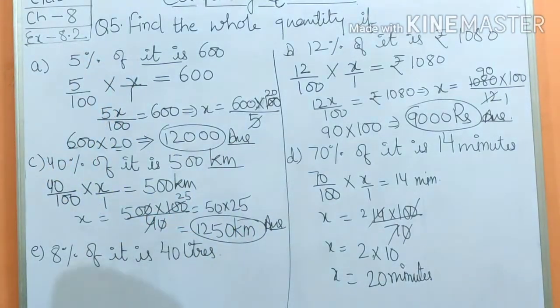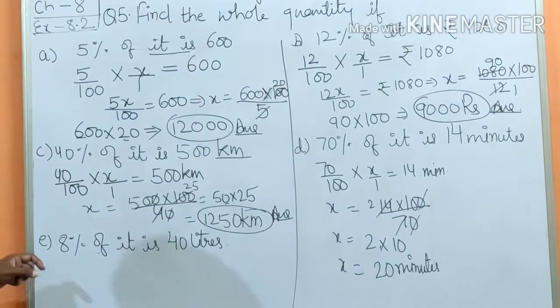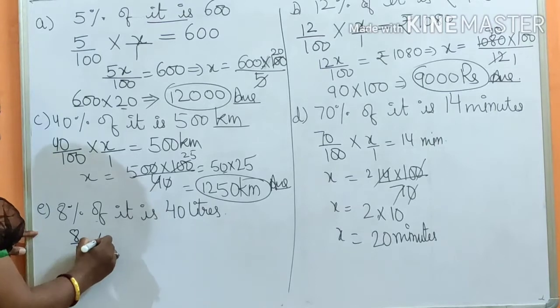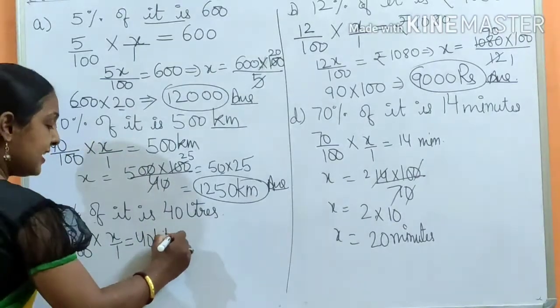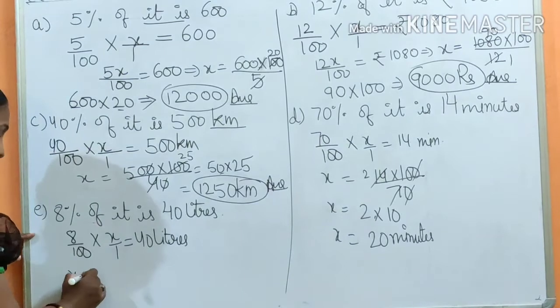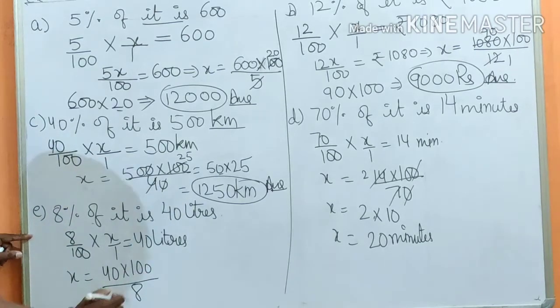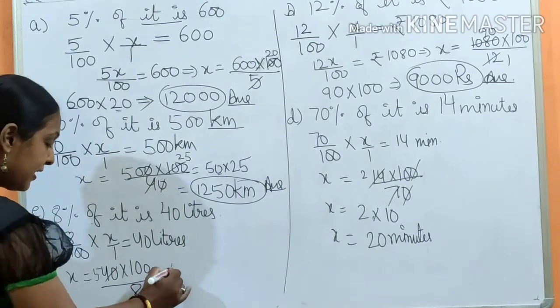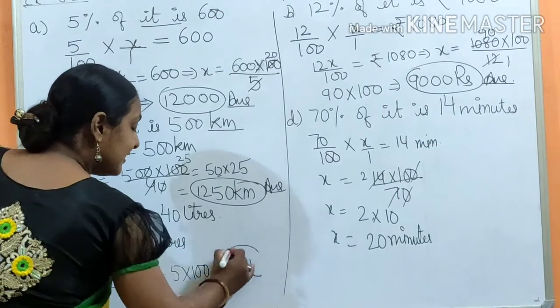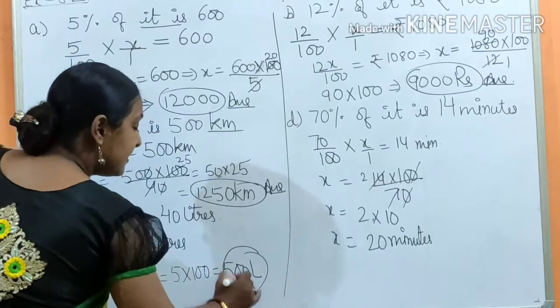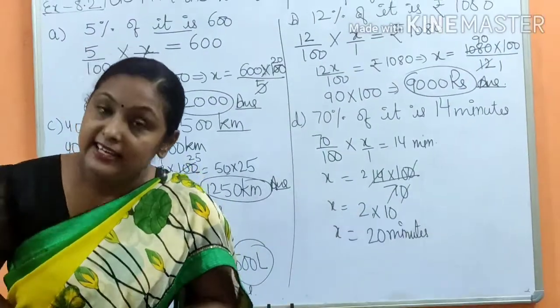Part e: 8% of it is 40 liters. 8% means 8 upon 100, of means multiply, it is means x upon 1, equals to 40 liters. Now we need to find x value. x equals to 40 multiply by 100 upon 8. From the table of 8, 40 becomes 5 times. So what I get is 5 multiply by 100, and the answer is 500 liters. If I have 500 liters and I take 8%, my answer will be 40 liters.